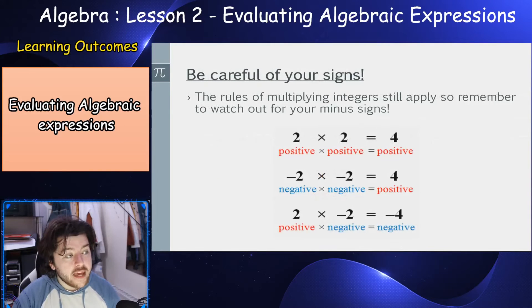So be careful of your signs. The rule of multiplying integers still applies, so remember to watch for your minus signs. Minus by minus is a plus, and minus by a plus is equal to a negative. Like signs give plus, different signs give negative.